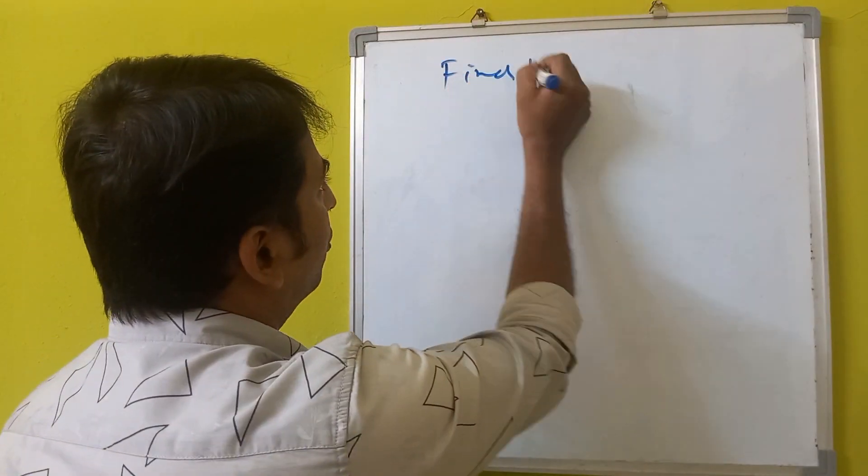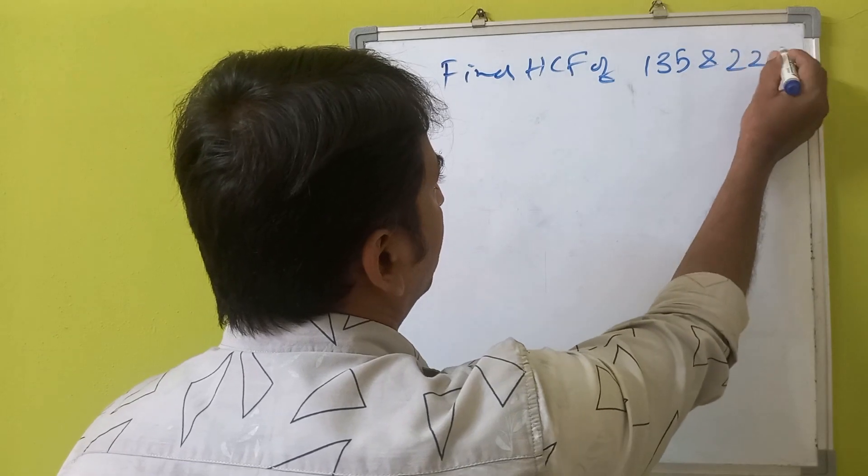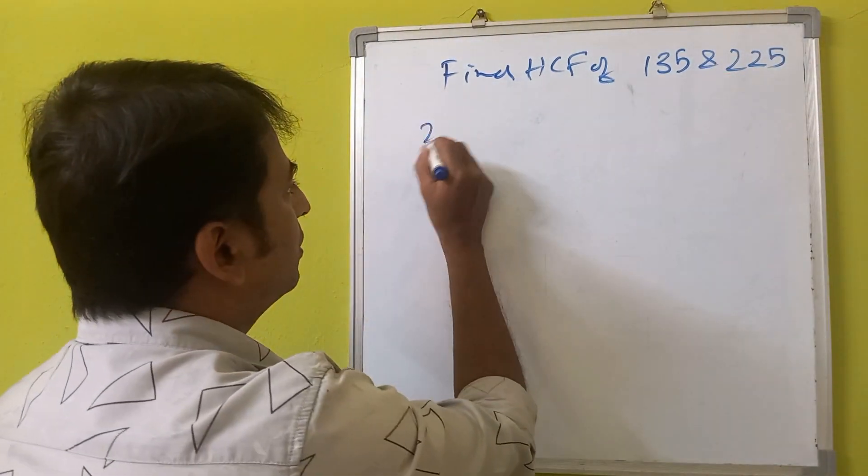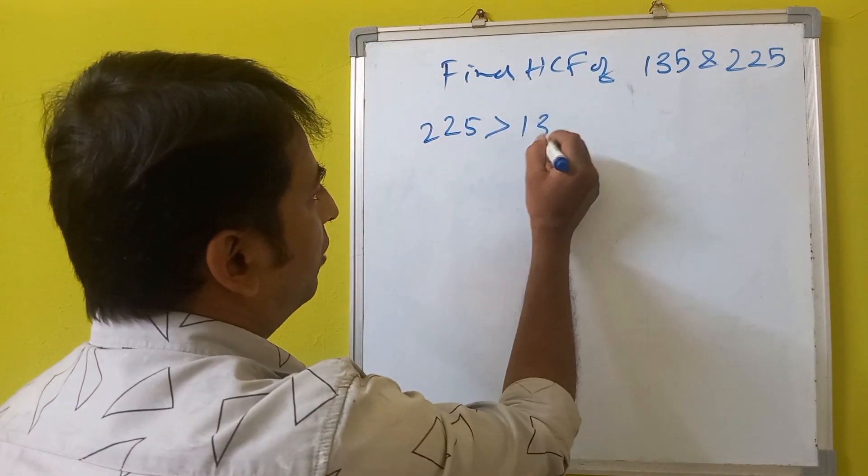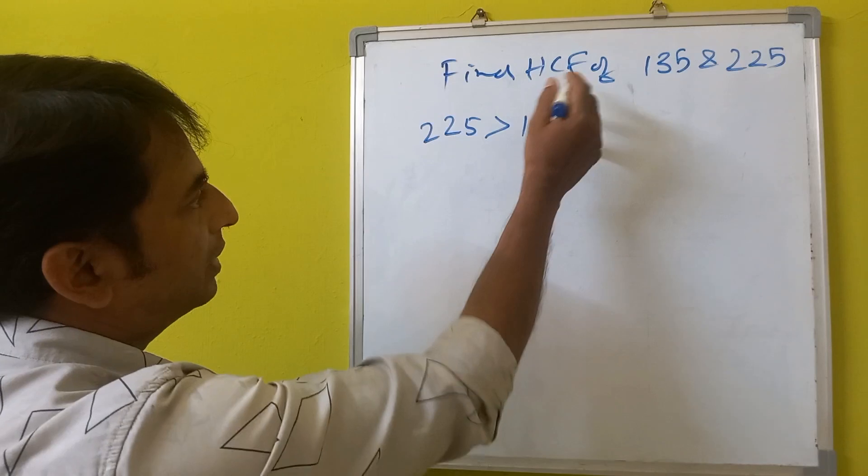Find the HCF of 135 and 225. Here you can see 225 is greater than 135. So we will apply Euclid's division lemma to find the HCF of this.